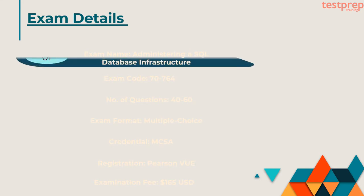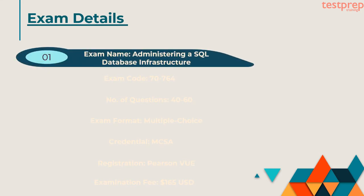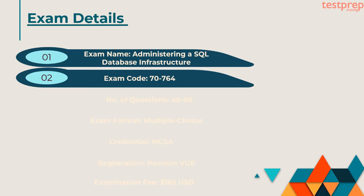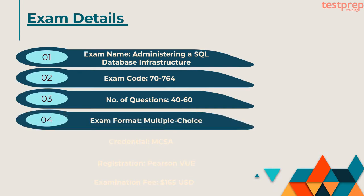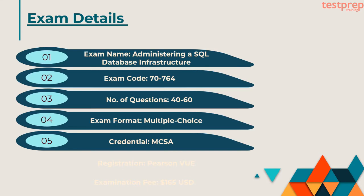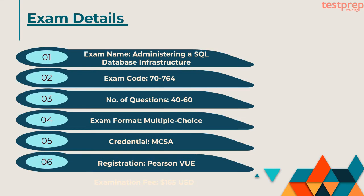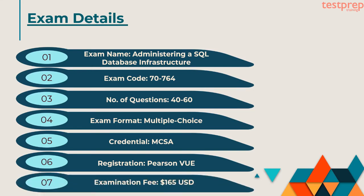Explaining the format of Administering a SQL Database Infrastructure 70-764 exam is the most important step. The exam includes 40–60 questions in the form of multiple choice. The candidate will get 120 minutes to complete the exam; in total, they get 150 minutes. The exam is available in various languages such as English, Japanese, Chinese, and Korean. The candidate has to pay 165 US dollars as the examination fee.